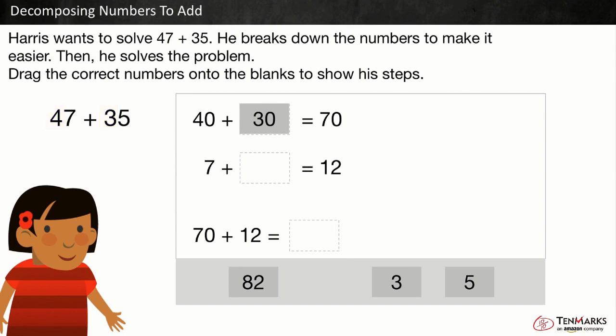40 plus 30 is equal to 70. Next we can add the ones. 47 has seven ones and 35 has five ones.